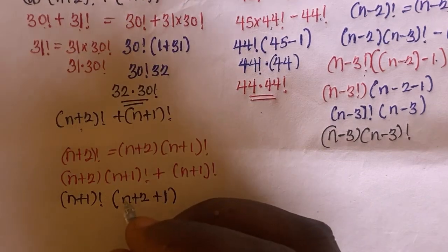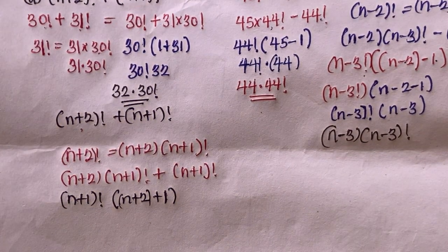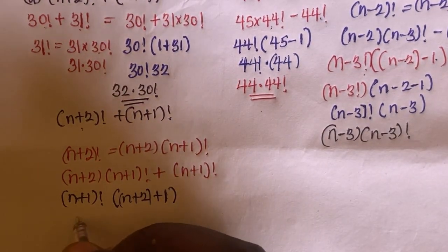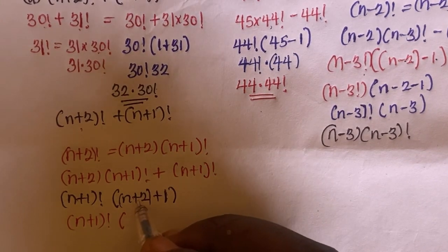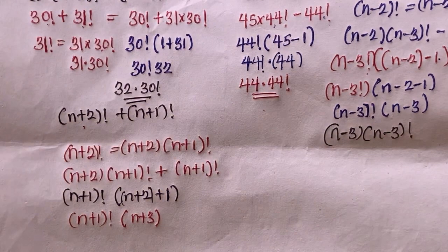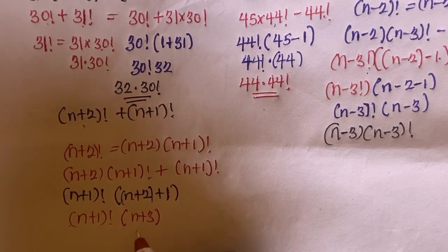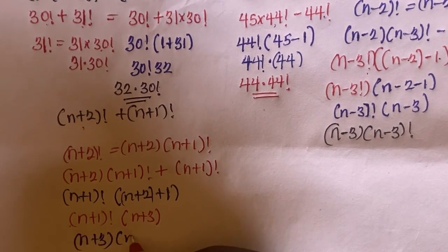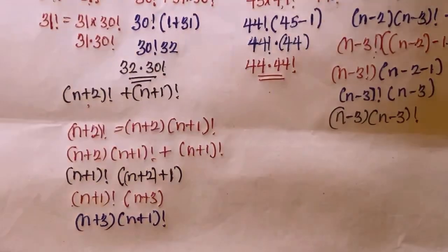Simplifying further, we have (n plus 1) factorial times (n plus 3). Since n plus 3 is the higher integer value, we bring it to the front, so the final answer is (n plus 3) times (n plus 1) factorial. It's just as simple as that.